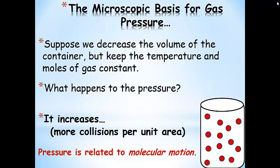Now, suppose we decrease the volume of the container but keep the temperature and the moles of gas constant. We know from Boyle's Law that the pressure increases when we decrease the volume. On a microscopic level, if we make the volume smaller, there's going to be less area that those collisions are distributed over — so more collisions per unit area. The pressure increases, and we can see that pressure is related to molecular motion.